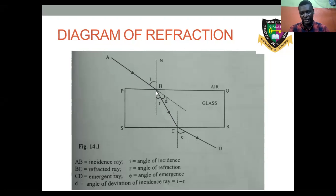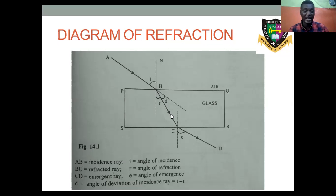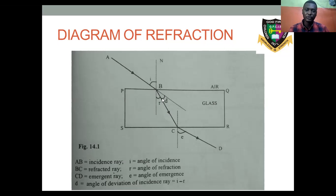Look at the actual direction the light is supposed to follow if it was not refracted. Refraction actually means the bending of any wave. But our main focus is light — that's why we are using light as a wave. Because light can also behave like a particle, but that is a discussion for another class.